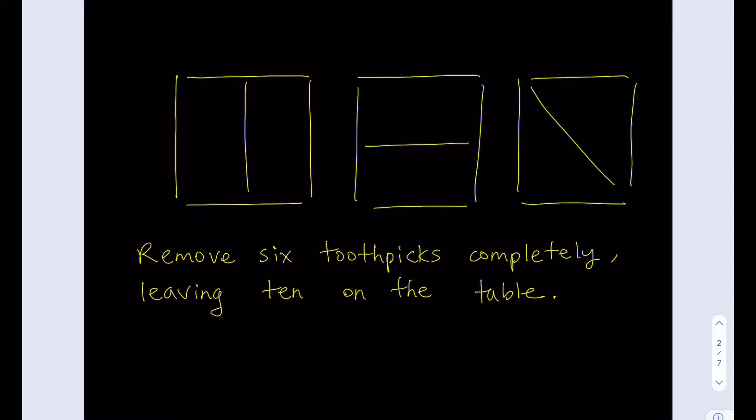All right, so let's take a look at how many toothpicks we have first. We have five here, we have five here, and five here, so that's a total of 15.